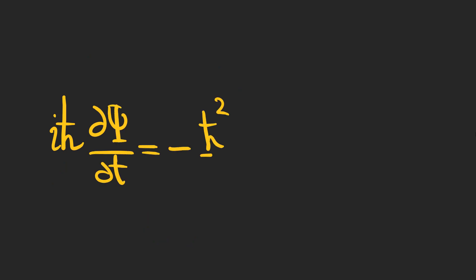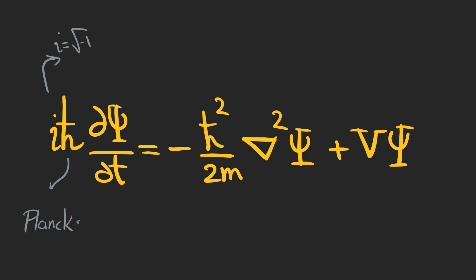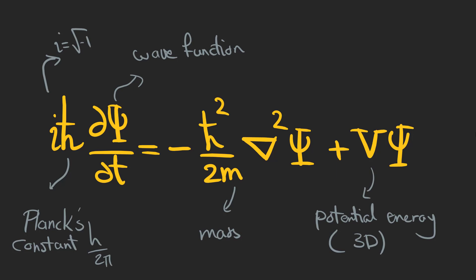Now, here is our Schrödinger equation, but this time in three dimensions, in which i is the square root of minus one, H-bar is Planck's constant divided by two pi, M is the mass of the particle, and V is the potential, but this time in three dimensions.